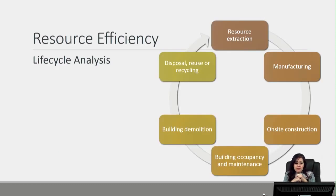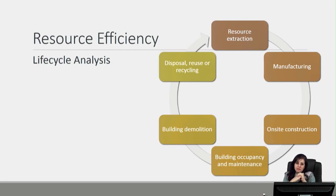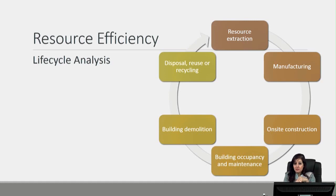When we talk about resource efficiency, a lot of people think that it is just by choosing a sustainable type of material. But we need to take into consideration all the stages of the life cycle of the materials used in our buildings. For example, we start at the resource extraction — how are these resources extracted from nature, what is the amount of power and resources they need, and would they cause pollution during extraction?